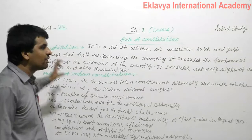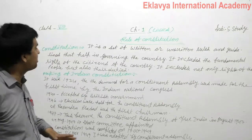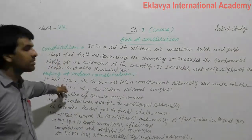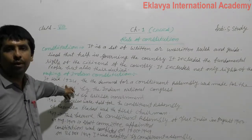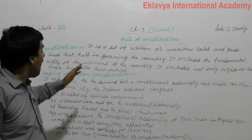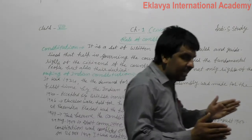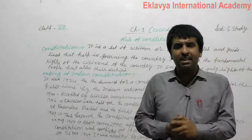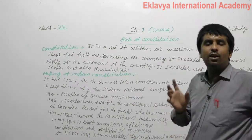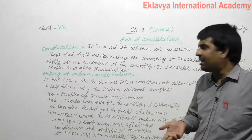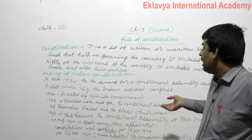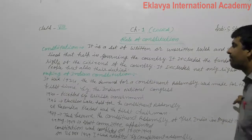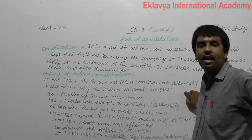Now, discussing the making of the Indian constitution: it was in 1934 that the Indian National Congress Committee made the demand for a constituent assembly for the first time.